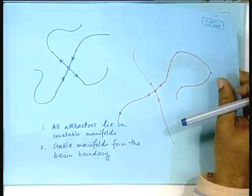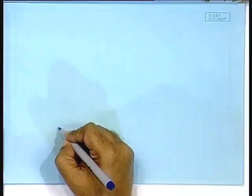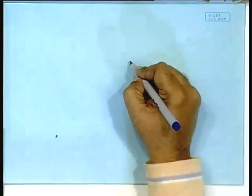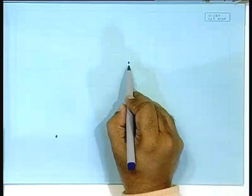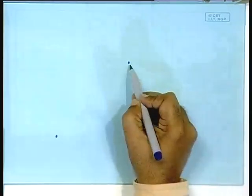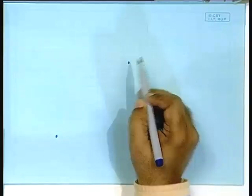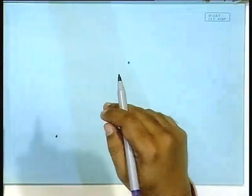Now let us understand some of the other interesting things that the stable and unstable manifolds do. Just recall in the last class when we considered the Henon map — we found that there are two fixed points, one fixed point sitting somewhere here, both are on the 45-degree line. This fixed point was a saddle, and this fixed point was an attracting fixed point. We also concluded that beyond a certain parameter value, as you change the parameter value, this one also loses stability.